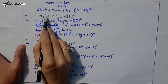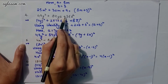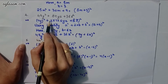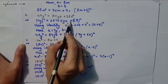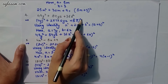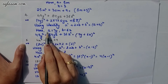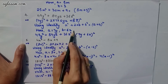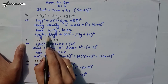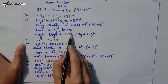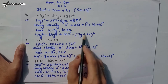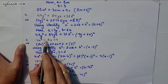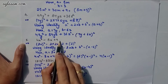Fourth part: 49y² + 84yz + 36z². We write this as (7y)² + 2·7y·6z + (6z)², using the identity (a + b)². Here a = 7y and b = 6z, so 49y² + 84yz + 36z² = (7y + 6z)².